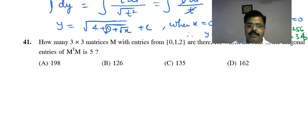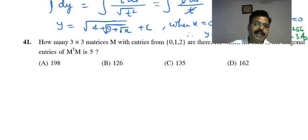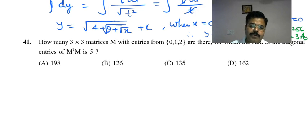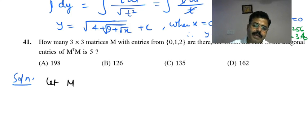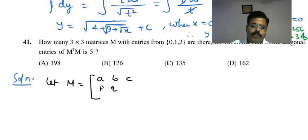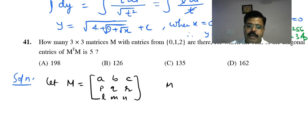Next question: how many 3×3 matrices M with entries from {0,1,2} have the sum of diagonal entries of M^T·M equal to 5? The sum of diagonal entries is the trace. Let M have entries A,B,C in row 1; P,Q,R in row 2; L,M,N in row 3. Then M^T is the transpose.